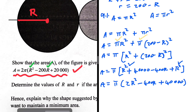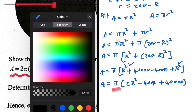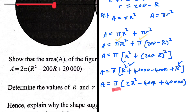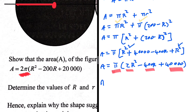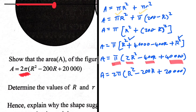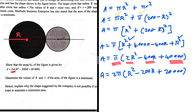So the area equals π times (R² plus R² minus 400R plus 40,000), which gives π(2R² minus 400R plus 40,000). Now look at how this differs from the equation we are supposed to prove — we have π but the target equation has 2π. We can take 2 out as a common factor, giving area equals 2π(R² minus 200R plus 20,000). This is exactly what we were supposed to show. That completes 9.1. Now let's look at 9.2.